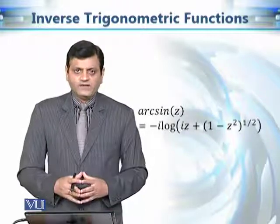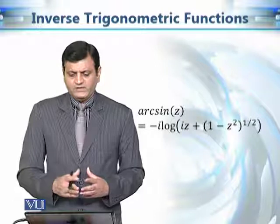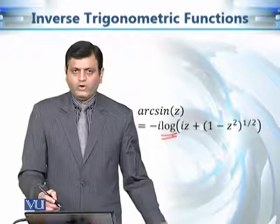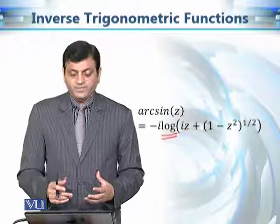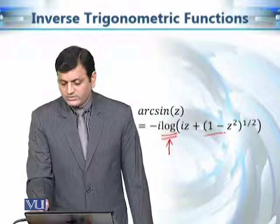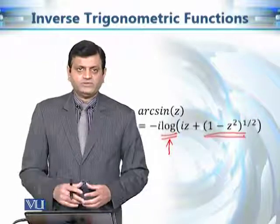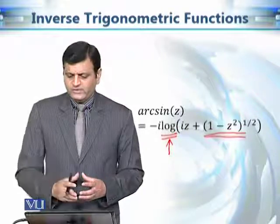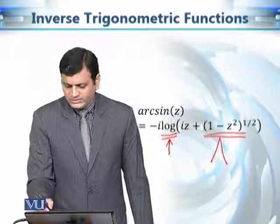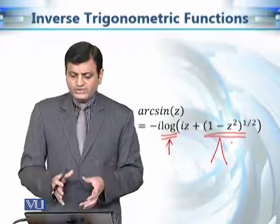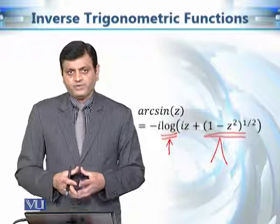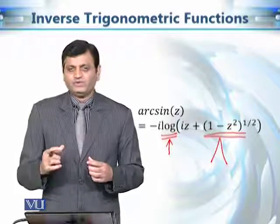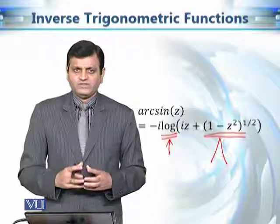Arc sine z is defined as: arcsin z = −i · log(iz + √(1 − z²)). It is a multivalued function for two reasons: first, the logarithm is a multivalued function; second, the square root function gives two outputs for any given complex number. Due to these two reasons, arc sine z is multivalued. Finding the values of z that correspond to a particular branch is a very complicated task, so we are going to ignore that discussion in this course.